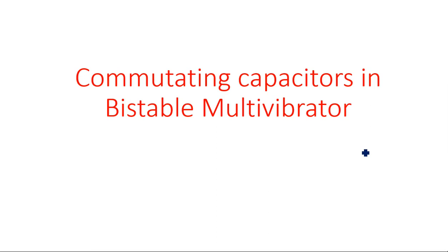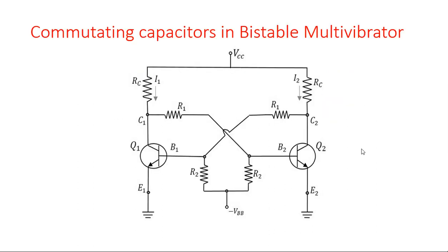In this video I am going to explain about the commutating capacitors and their purpose in the bistable multivibrator. These commutating capacitors are most commonly preferred in the fixed biasing bistable multivibrator. This is the fixed bias bistable multivibrator where no physical capacitor is involved — virtually, however, capacitors are present.